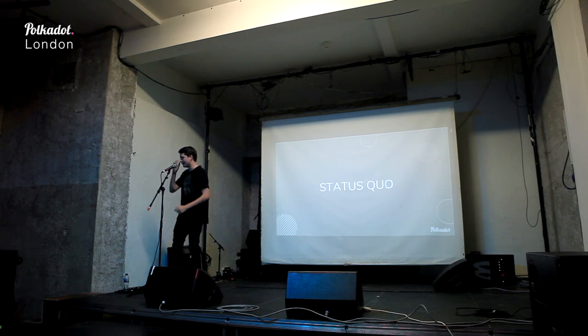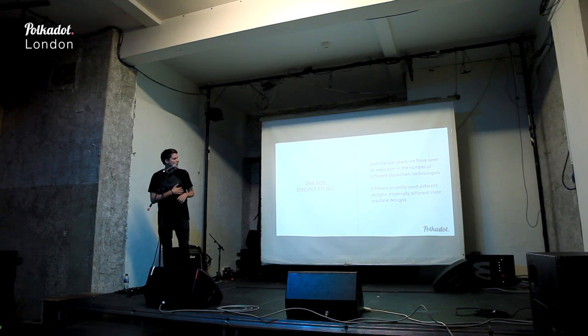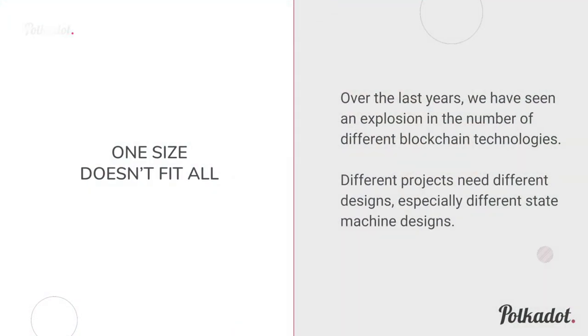So, status quo. I want to talk about what the problems are we're seeing right now and how the ecosystem looks. Over the course of the last couple of years, we've seen an explosion in the number of not just blockchains deployed, but actually different blockchain technologies. Although we have general-purpose blockchains like Ethereum, not everyone is building on Ethereum — because if you have different use cases and different projects, you actually need different designs. This is especially true for state machine designs.